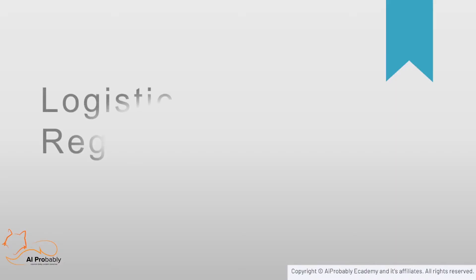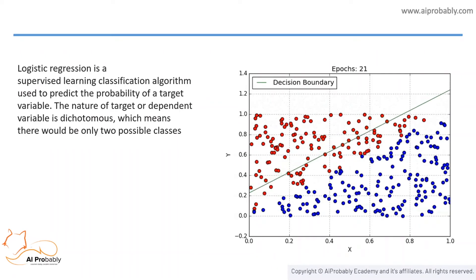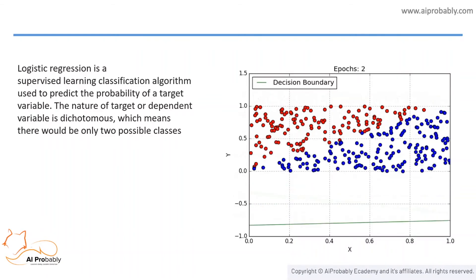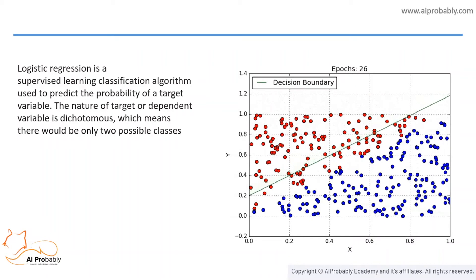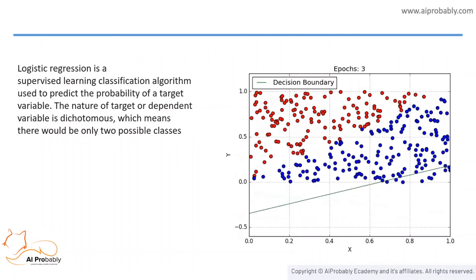Let's now see how we can classify the data. We will be using logistic regression on the dataset. Logistic regression is a supervised learning classification algorithm used to predict the probability of a target variable. The nature of the target or dependent variable is dichotomous, meaning there are only two possible classes. It is used for classification problems, is a predictive analysis algorithm, and is based on the concept of probability. The hypothesis of logistic regression limits the cost function between zero and one.